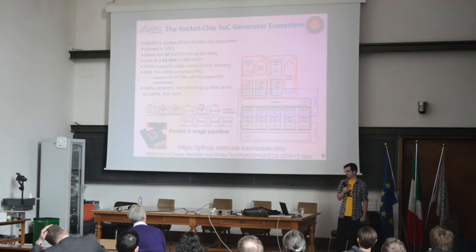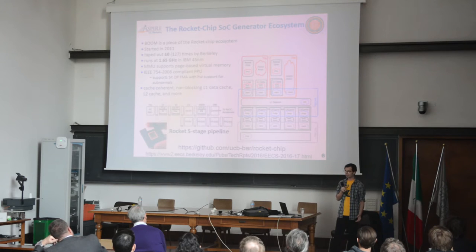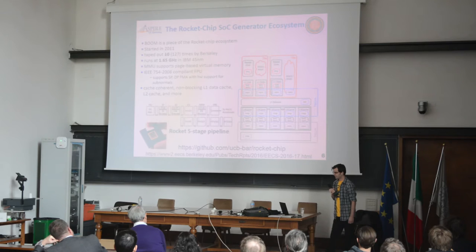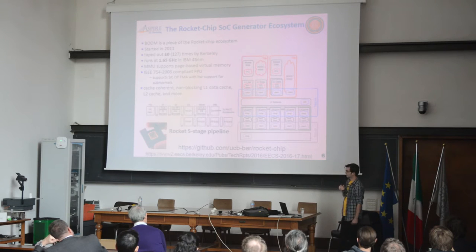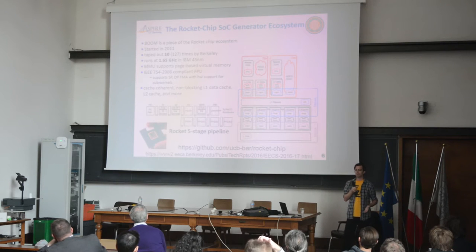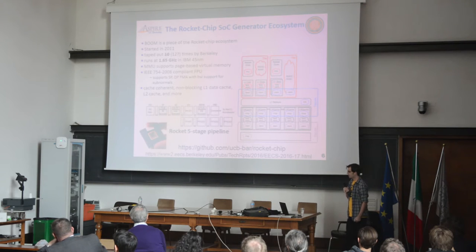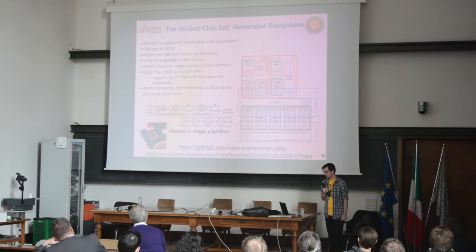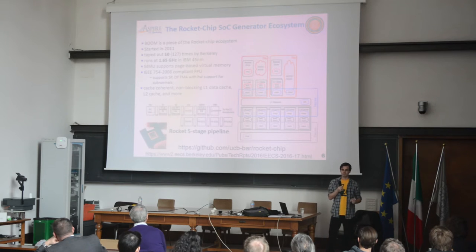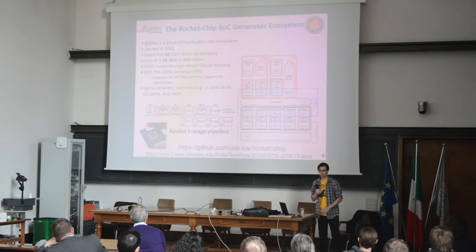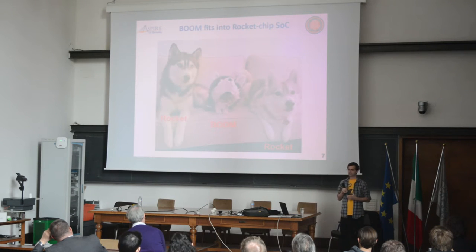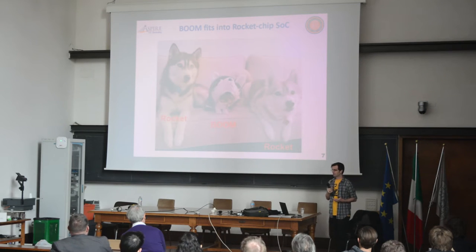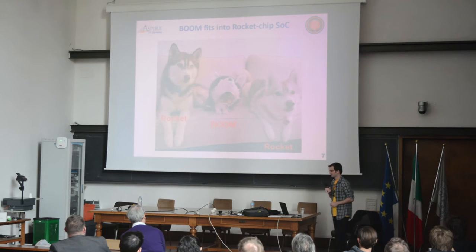The first piece I want to talk about is the Rocket Chip SoC generator. It was started about five years ago and has been taped out maybe 12 or 13 times, hitting about 1.6–1.7 GHz — the fastest in IBM 45nm. The idea is you have an in-order Rocket core with private L1 caches, and you can have multiple heterogeneous tiles talking through a network to L2 cache banks. It boots Linux, implements the full RISC-V RV64G ISA, and what I do with BOOM is simply swap out a Rocket core and put in a BOOM core. BOOM speaks the same TileLink interface and the same ISA, so to the outside world it's transparent.